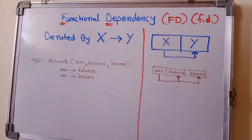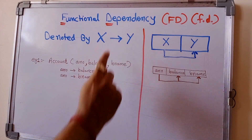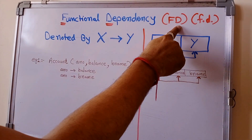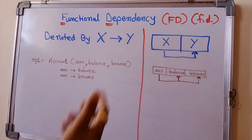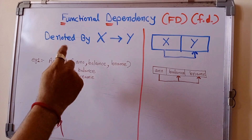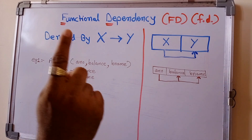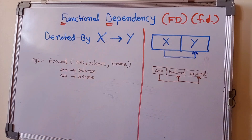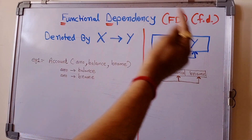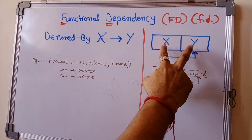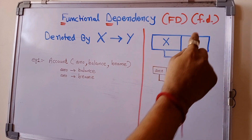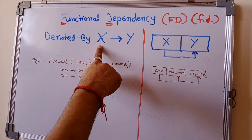Hello friends, today we will learn what is functional dependency. Functional dependency is denoted by capital FD as well as small f.d. It is denoted by X arrow Y. X and Y are two sets of attributes, and X determines the value of Y, meaning that X is the determinant.